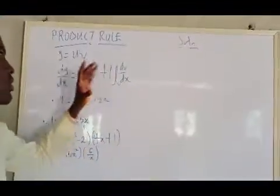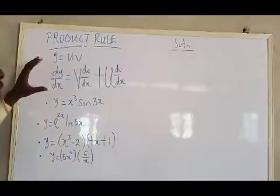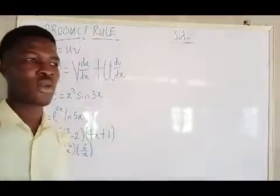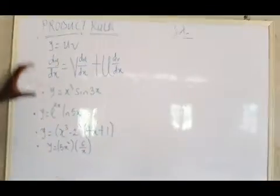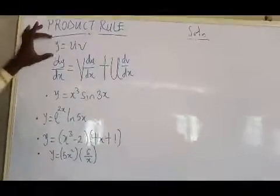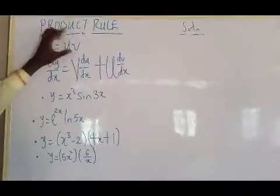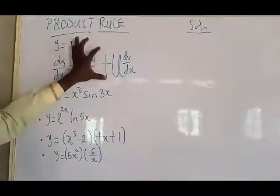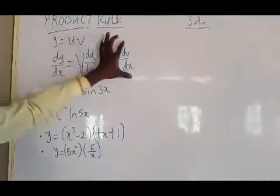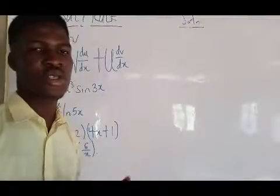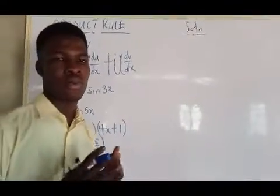Today I want to look at product rule and the steps involved in solving questions on product rule. The formula for product rule is: if y equals uv, the formula simply means v differentiates u plus u differentiates v. I'm going to be solving it using the shortcut and the normal process.